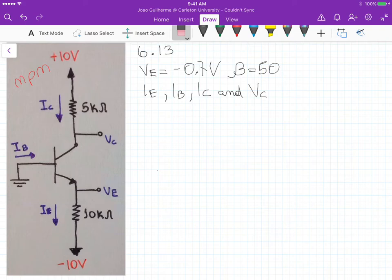Now, some information that we know out of this circuit is that the voltage at the emitter is minus 0.7 volts, and the common emitter current gain is beta equals to 50. We also know the values of the resistors, the resistor at the collector, 5k ohm, and the resistor at the emitter, 10k ohm.